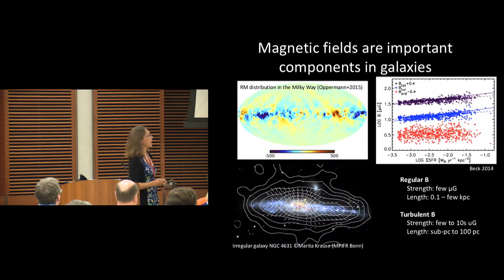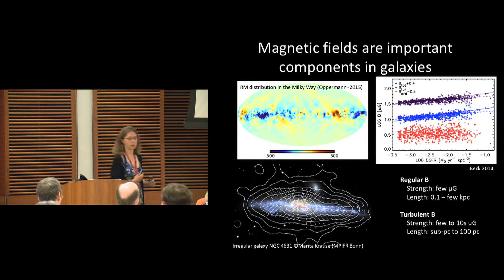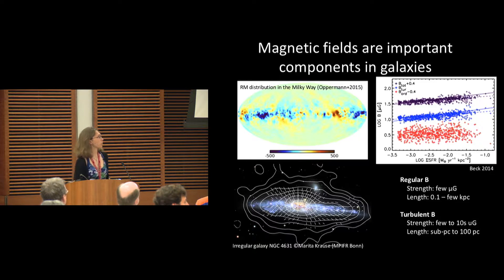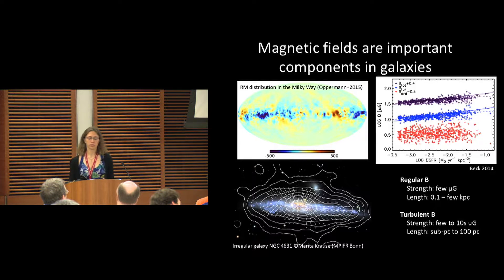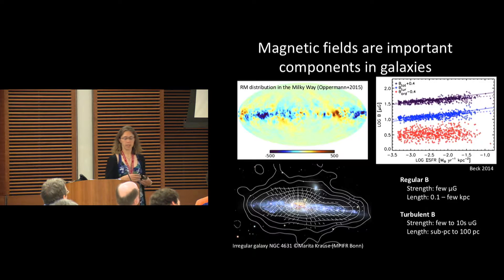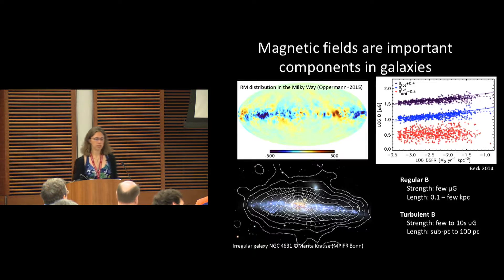When we measure these components, the regular field has magnetic field strengths on the order of a few microgauss, and they can be coherent from hundreds of parsecs to a few kiloparsecs.